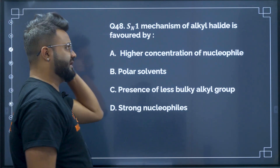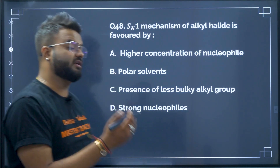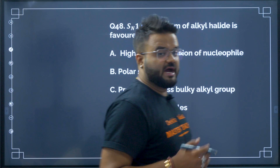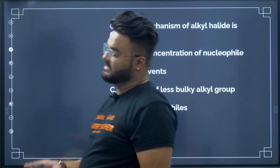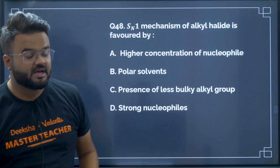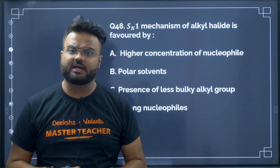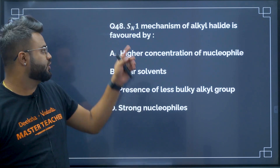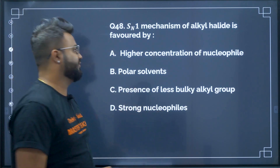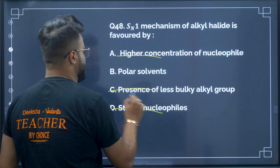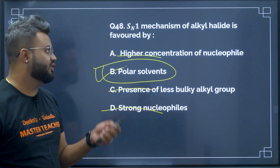Question number 48: SN1 mechanism of alkyl halide is favoured by which condition? High concentration of nucleophile? No. Polar solvent? Yes — we use polar solvent in SN1 mechanism. Presence of less bulky alkyl group? No. Strong nucleophile? No. Therefore option B — polar solvent — will be your correct answer.